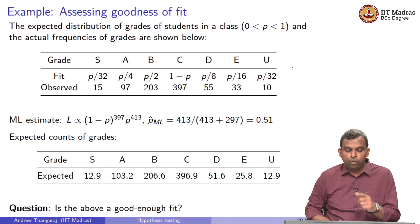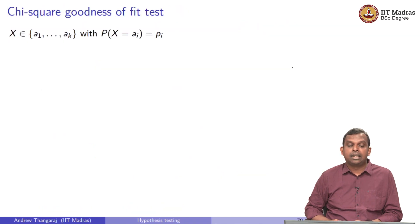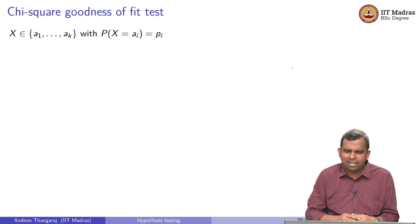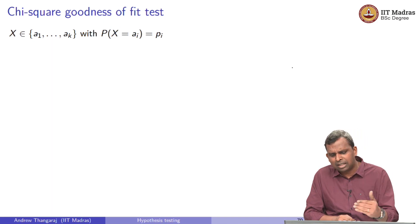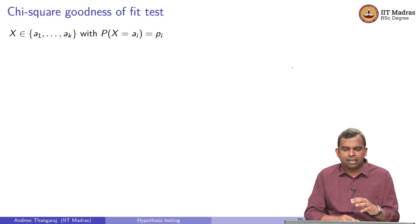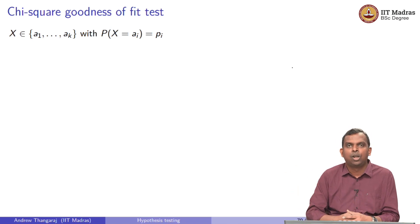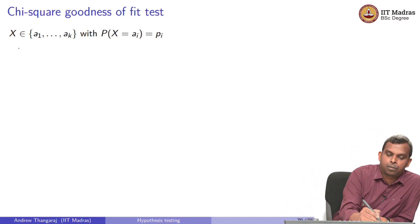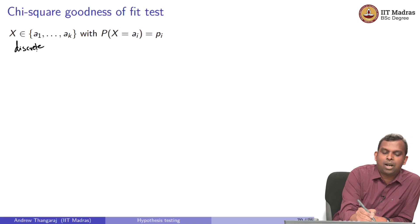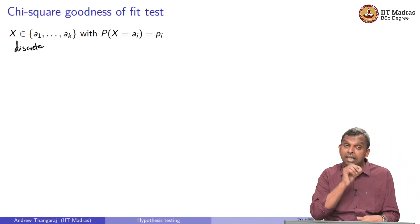It turns out if you were to ask a question like is the above a good enough fit, there is an answer and that answer typically one way of answering it is to use something called the chi square goodness of fit test. How does this work? I will first describe this test in a general situation and then apply it in the grade situation and show you how it works. And then we will see a couple of modifications of this test. So the chi square goodness of fit test: you have a random variable X, it is discrete. First thing we are assuming is this is a discrete random variable.